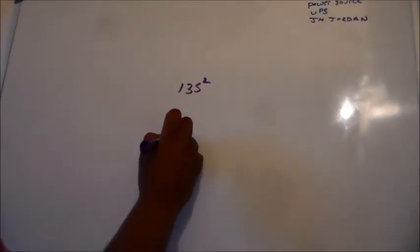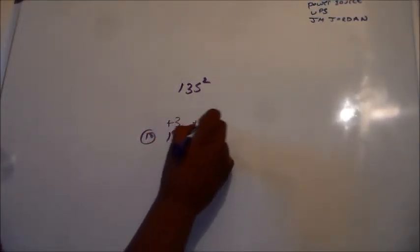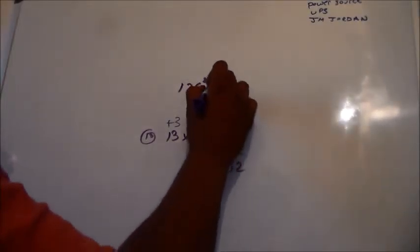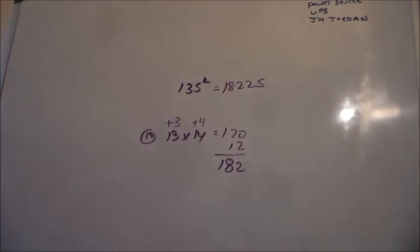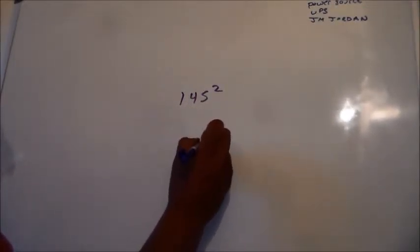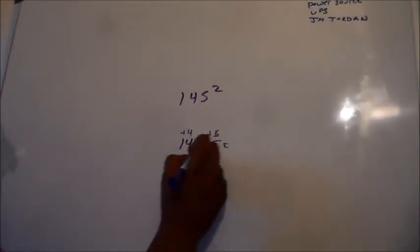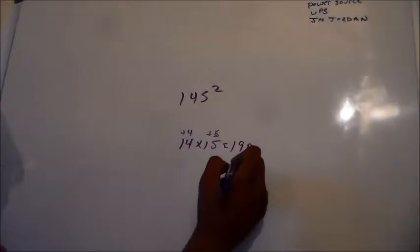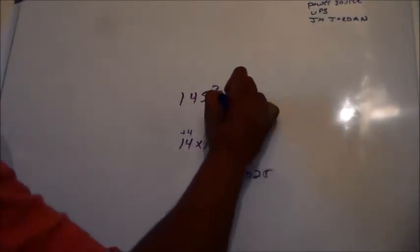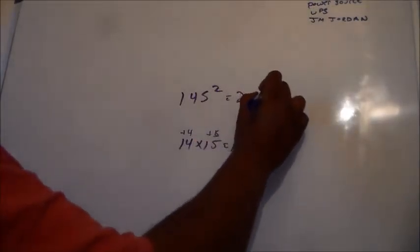135 squared. 13 times 14. 145 squared. 14 times 15. And even if you can't remember my reference, I mean, it's going to take you a long time to do it the regular way. The answer is 19,020, wait, 21,025 is my answer. 210. And 210 is 14 times 15. It's 210. And then, we add the 25.